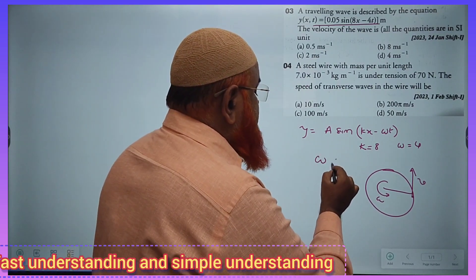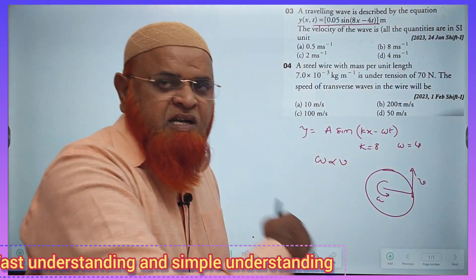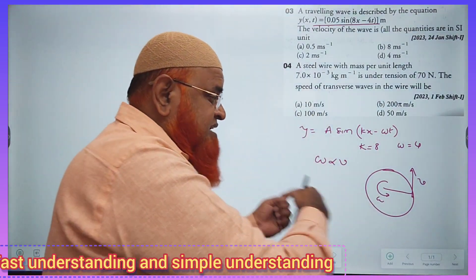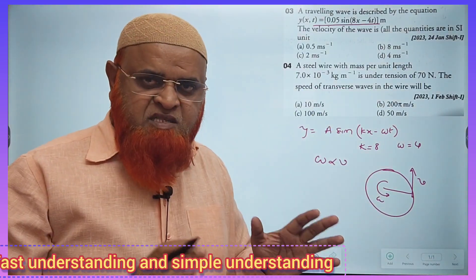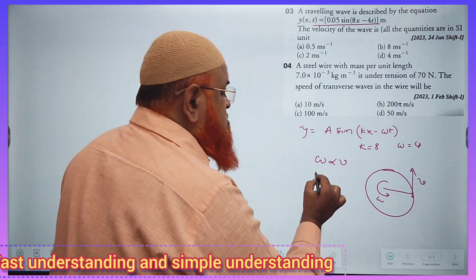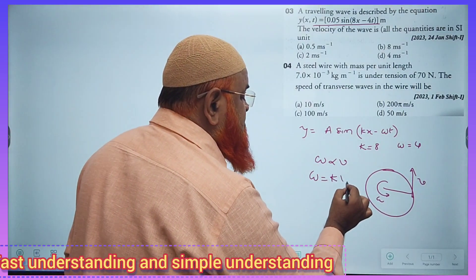angular velocity is directly proportional to linear velocity. The greater the linear velocity, the faster will be the angular velocity. Then what you will do? If you remove the proportionality, you will get a constant that is k.